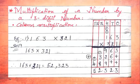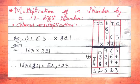Next we multiply with the tens digit, which is 2. We already multiplied by 1, so we write one plus (zero) in ones place. 2 × 3 = 6. Then 2 × 6 = 12: write 2 and carry 1 to hundreds. Then 2 × 1 = 2, plus carry 1 = 3. This gives 326, placed in the tens row.